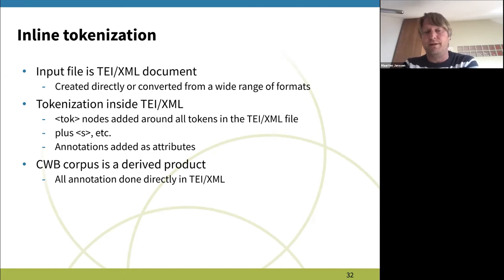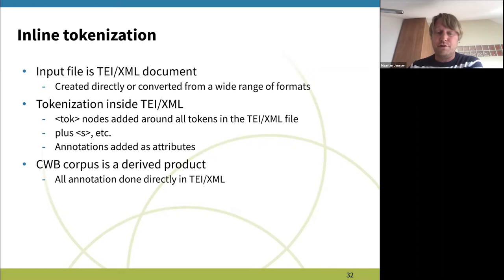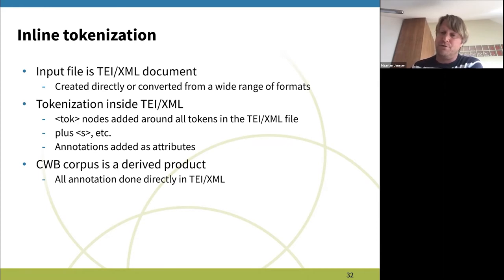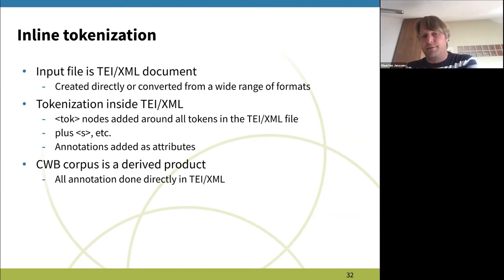The tokenization is then done on top of that TEI XML file without throwing anything away, which means we put a node around all the tokens in the corpus, and we then put annotations on top of those nodes. The searchable part is the corpus workbench, but that is actually a derived product. So the corpus workbench corpus isn't the actual corpus; it is just a corpus created for the purpose of searching the data. All annotation is directly done on TEI XML, and the CWB corpus is, from time to time, simply updated based on the TEI XML files.